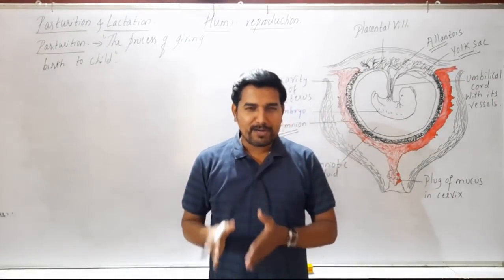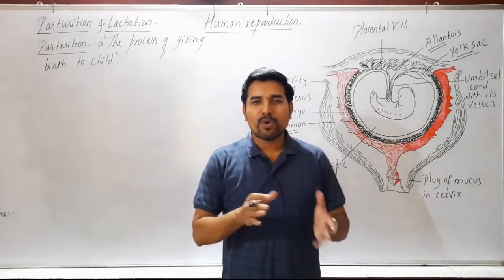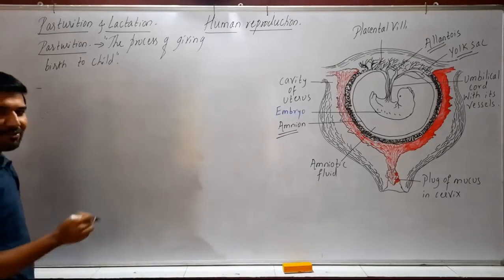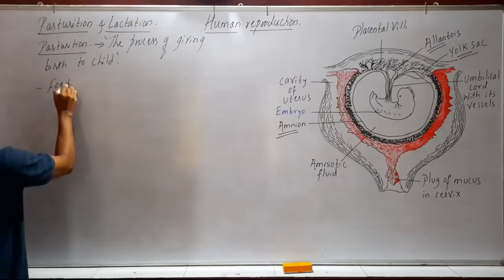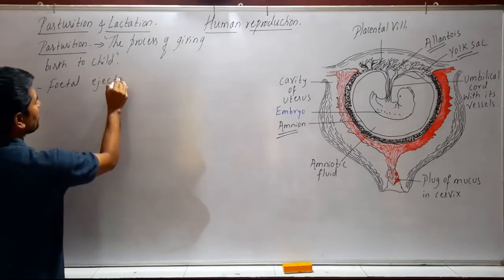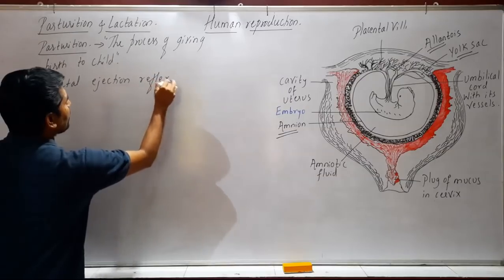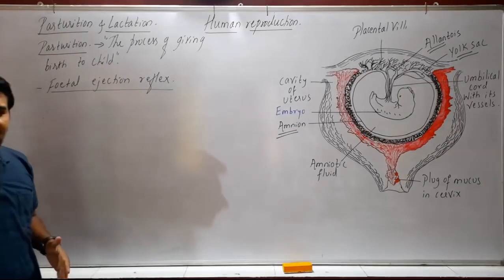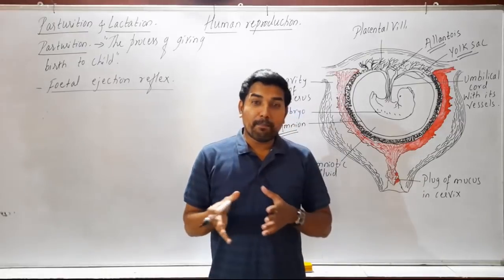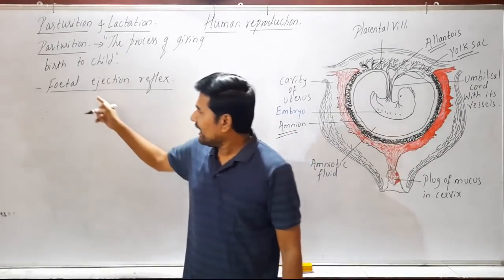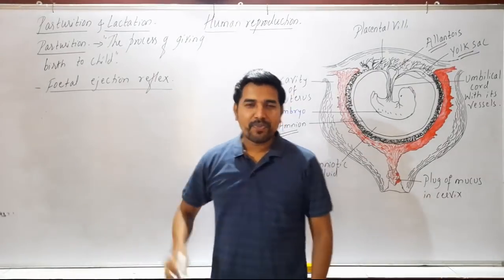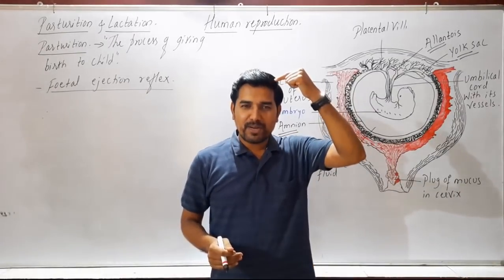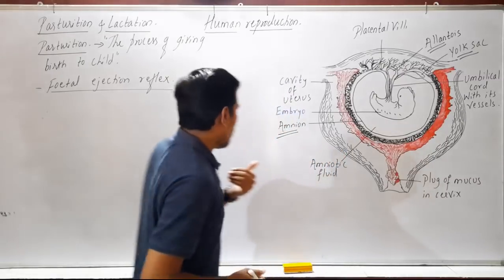For the process of parturition, or delivery of the baby, the placenta induces certain reflexes called the fetal ejection reflex, also referred to as FER. The placenta produces mild contractions in the uterine layer, which is called the fetal ejection reflex. This fetal ejection reflex, through its neuroendocrine system, stimulates the pituitary gland to release a hormone called oxytocin.